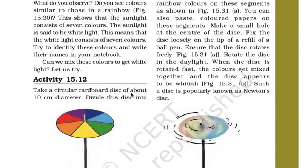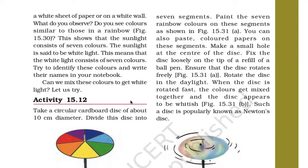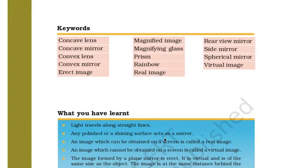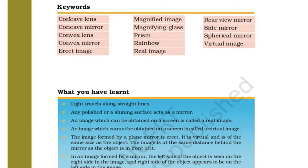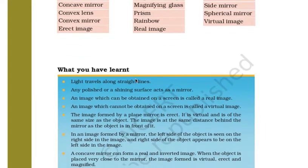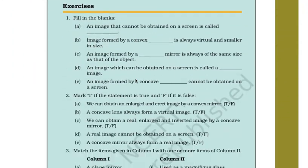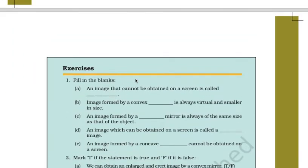Take a circular cardboard disc of about 10 centimeter diameter and divide it into seven segments. This is one more very interesting activity. Here we have completed our chapter in part 2. The key words are: concave and convex lenses and mirrors, erect image, magnifying glass, and more. There is a summary note and questions and answers. We have completed this chapter. If you like my videos, don't forget to subscribe to my page, hashtag studies. Thanks for watching.